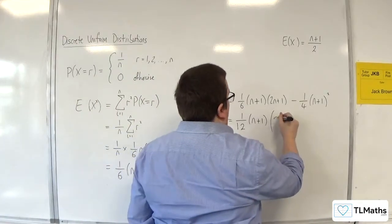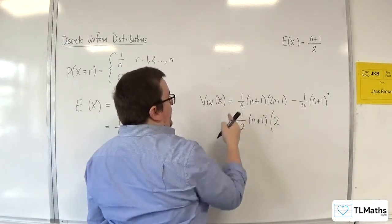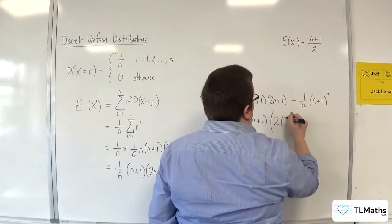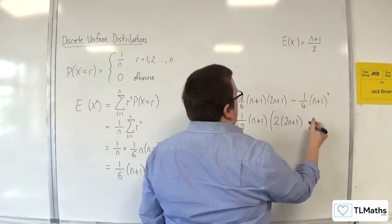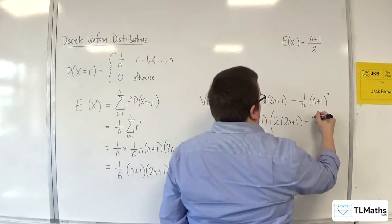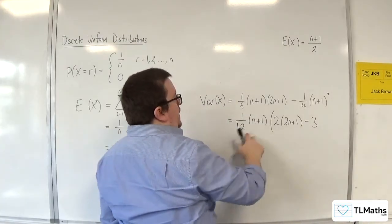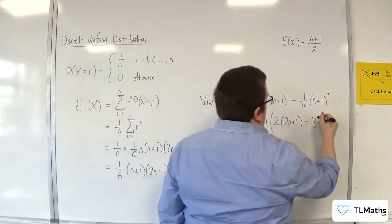And what we'll have left is 2, because 2 lots of 1 twelfth is the sixth, times 2n plus 1. Take away 3, because 3 lots of 1 twelfth is the quarter, lots of n plus 1.